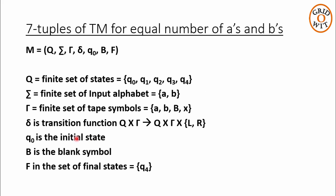Now let us see the 7-tuples for this Turing machine. We have 5 states, that is from q0 to q4. Symbols A and B are in the input alphabet sigma. Symbols A, B, blank symbol, and symbol X are in the tape symbols. The transition function we have already discussed through the transition diagram. Note that we have only left and right movement in this transition function because we are using the standard Turing machine. q0 is the initial state, the blank symbol is denoted by capital B, and in the set of final states we have state q4.